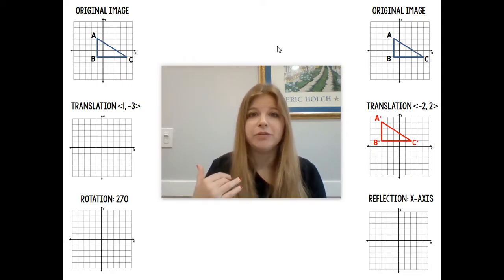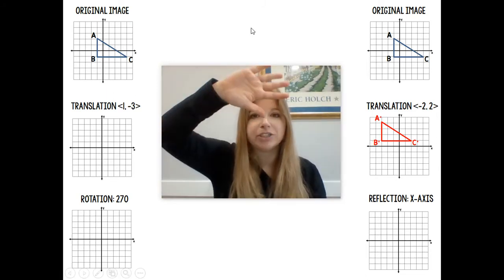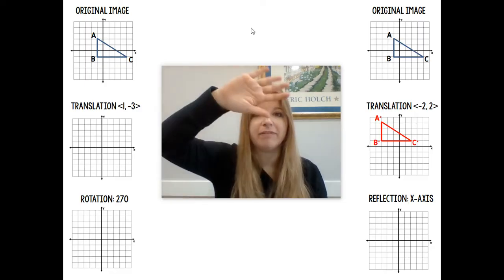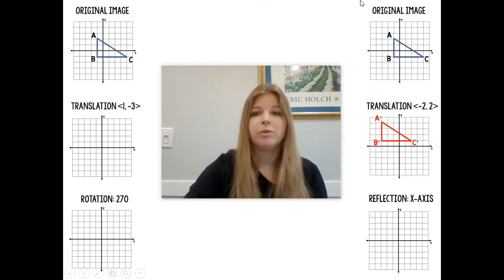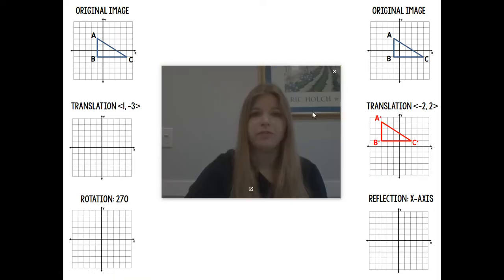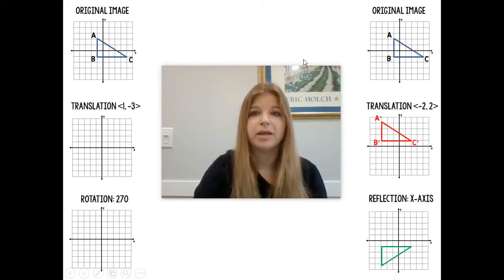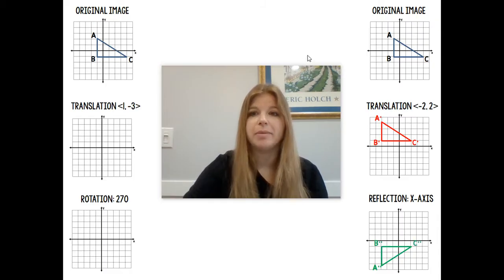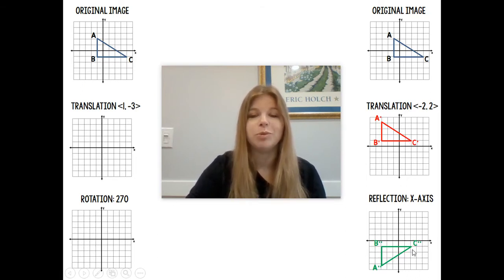Now if I take that new image and have it undergo a reflection in the x-axis, I have to take that triangle and flip it right over. A prime at negative 3, 4, reflected over the x-axis, becomes A double prime at negative 3, negative 4 — now in the third quadrant. So the composition of a translation of negative 2, 2 and then a reflection in the x-axis gives us this final result. Notice the image gets primes and the next image gets double primes.